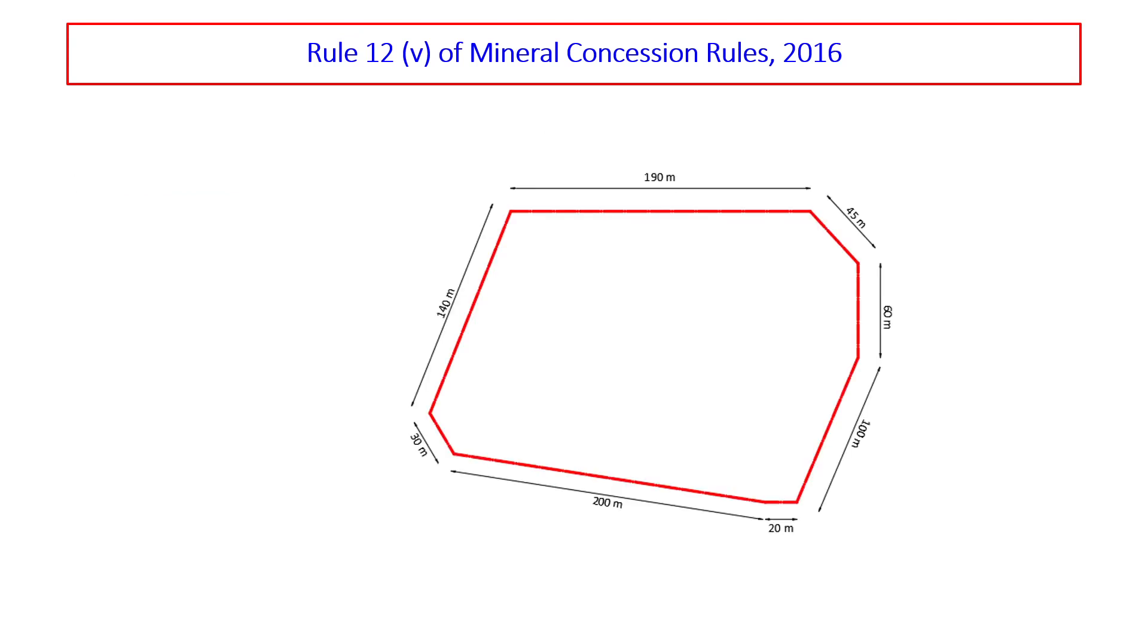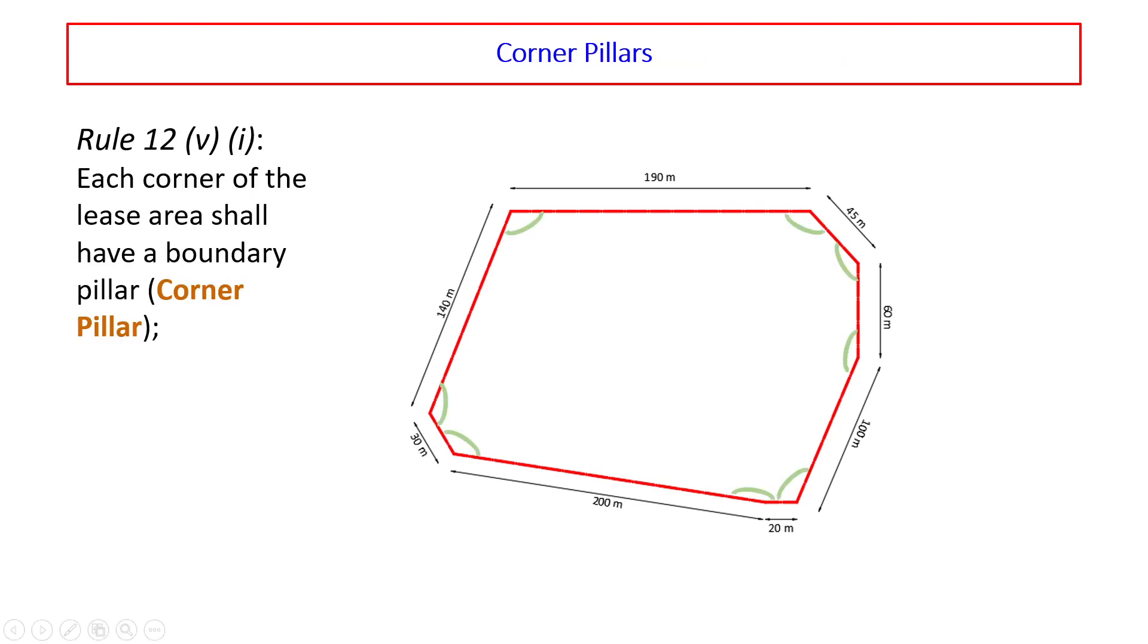As an example for this video, a mining lease boundary has been made with the boundary dimensions as shown. Each corner of the lease area shall have a boundary pillar which is called Corner Pillar. Corner is the bend in the lease boundary.